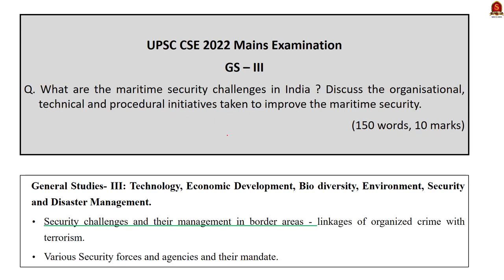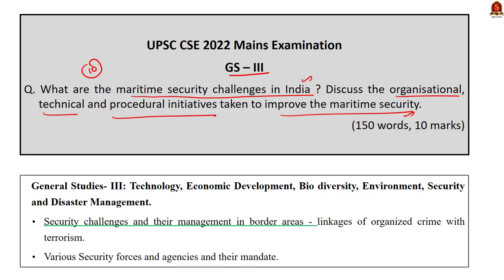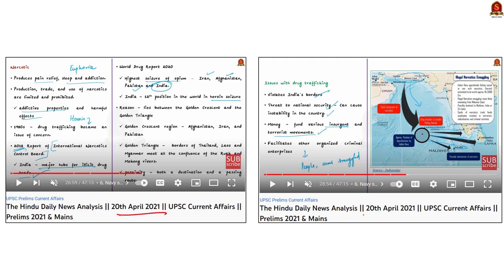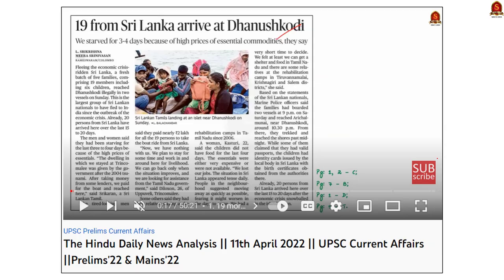Question number 10 in GS Paper 3: 'What are the maritime security challenges in India? Discuss the organizational, technical, and procedural initiatives taken to improve maritime security.' The maritime security challenges were covered in various videos. In our 6th July 2022 Hindu News Analysis, while discussing the Belt and Road Initiative, we covered maritime challenges India faces with respect to Pakistan, Sri Lanka, and Maldives. In our 20th April 2021 Hindu News Analysis on drug trafficking, we saw how drug trafficking by sea poses a security challenge. We also covered Sri Lankan refugees on 11th April 2022, which links to maritime security challenges.